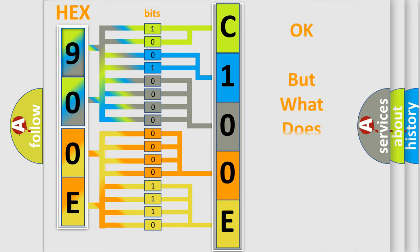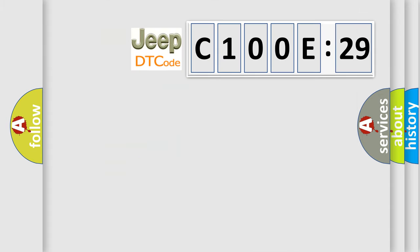The number itself does not make sense to us if we cannot assign information about what it actually expresses. So, what does the diagnostic trouble code C100E29 interpret specifically for Jeep car manufacturers?